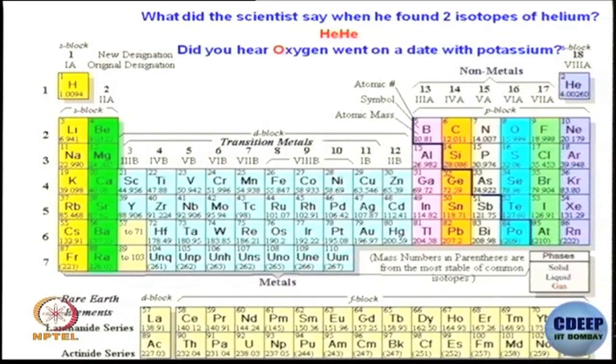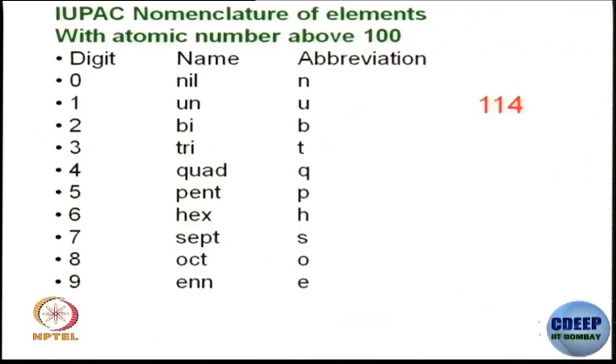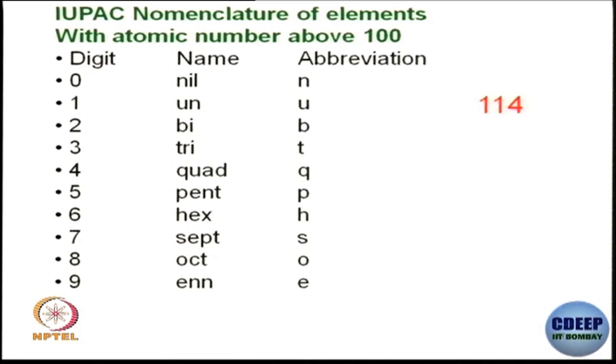First let us look at the nomenclature of unknown atoms. A lot of new elements are getting discovered. If an element with atomic number 114 is discovered, what will be the nomenclature? The nomenclature for earlier elements is already done — we do not have to worry about hydrogen, helium, lithium, beryllium, carbon, nitrogen, and so on. But if a new element with atomic number greater than 100 is discovered, what would be the IUPAC way to name it?